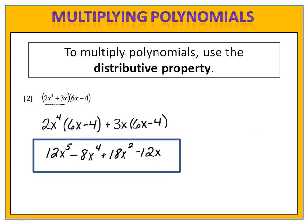We did our distribution and then we combined like terms where needed. We have 12x to the 5th minus 8x to the 4th plus 18x squared minus 12x.